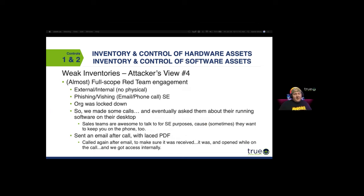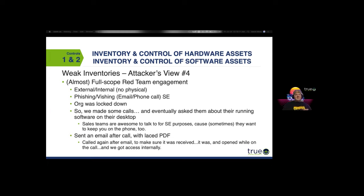Attacker view number four — a full-scope red team engagement: external, internal, no physical, but with phishing and social engineering. Everything was really locked down, so we made some phone calls and eventually talked to some sales reps. We sent an email after the phone call with a laced PDF, called them back and asked them to open it. As soon as they opened it — it had some content in it — we had access to their network.